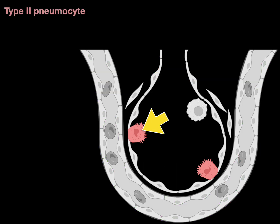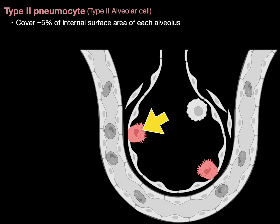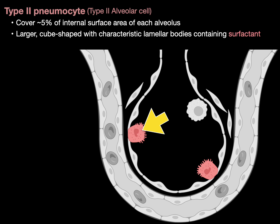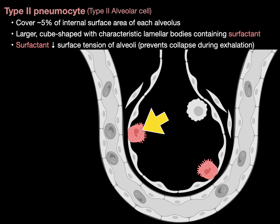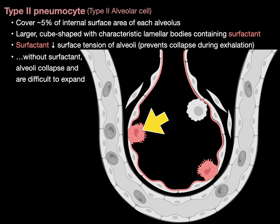There are also type 2 pneumocytes, or type 2 alveolar cells. They cover about 5 to 7% of the internal surface area of each alveolus. They're larger, cube-shaped, and have characteristic lamellar bodies containing surfactant. Surfactant reduces the surface tension of alveoli, preventing their collapse during exhalation. Without surfactant, alveoli collapse and are difficult to expand.